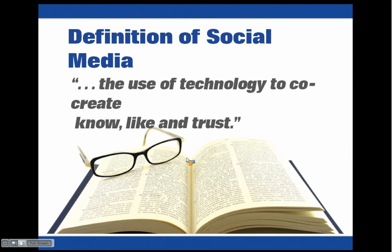Everything we do in marketing can be broken down into three areas: know, like and trust. Demand generation or branding gets people to know you — they know you're out there and potentially have a solution. But in order for them to build a relationship with you, they have to like you, and in order to buy from you, they have to trust you. Social media can help people find you, but it's really about giving them information and content to help them begin to like and trust you.